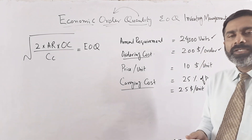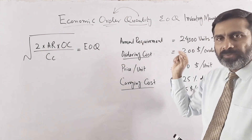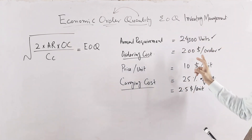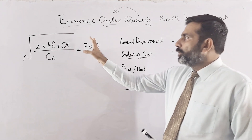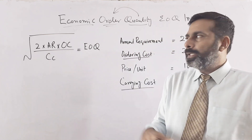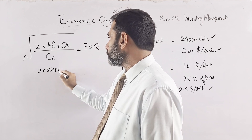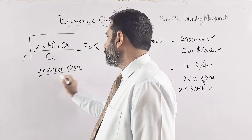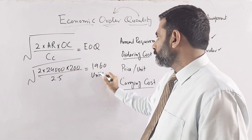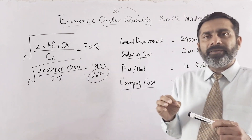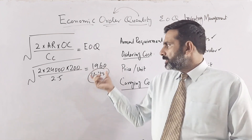The economic order quantity formula is: EOQ = square root of (2 × annual requirement × ordering cost / carrying cost). Plugging in the values: 2 × 24,000 × 200 divided by 2.5, and taking the square root, the answer is approximately 1,960 units. So whenever they place an order, they should buy 1,960 units.